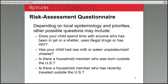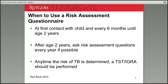When should risk factor assessment be used? At the first contact with a child and every six months until age two years, primarily for primary care providers. After age two, risk assessment questions should be asked every year if possible. Any time TB risk is determined, a TST or IGRA should be performed. Remember: a decision to test a child is a decision to treat. We don't want anyone testing children and then hesitating to treat — if the child tests positive, proceed with full assessment.